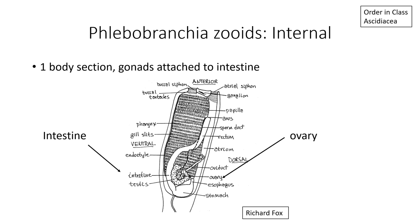Internally, if we look at Phlebobranchia zoids, there's a single body section — remember, in Aplusobranchia there are two or three body sections. In contrast, Phlebranchs have only a single body section, and the gonads are attached to the intestine. In this nice diagram from Richard Fox, we see the intestine connected to the stomach, to the rectum, and finally to the anus. The ovary is attached to that intestine — lying inside the gut loop. The intestine makes a U-shaped loop structure, and the ovary lies right inside of that, physically attached to the intestine.